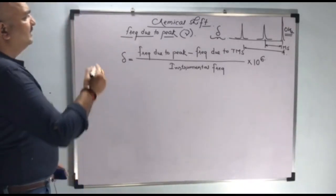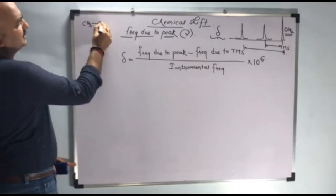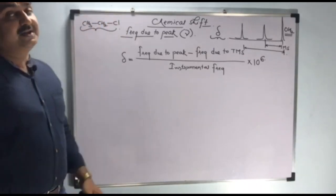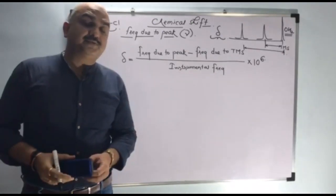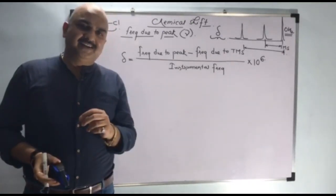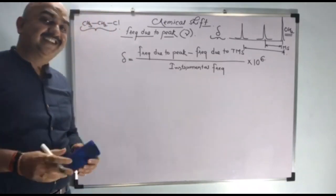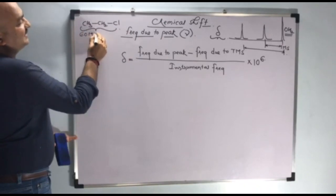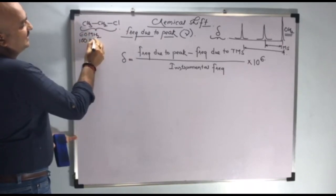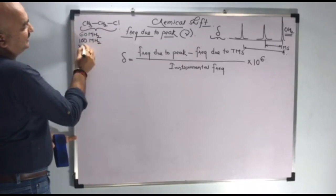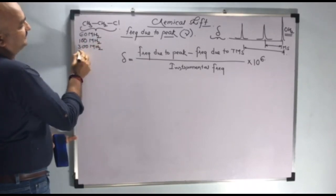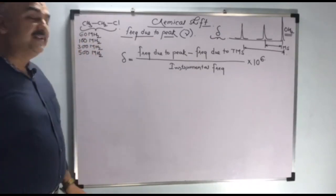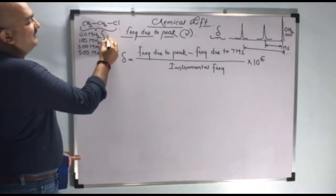Consider in this CH3-CH2-Cl NMR spectra we have taken. NMR spectra is a graph of absorption versus external magnetic field, where radio frequency is kept constant. That radio frequency is either 60 megahertz, 100 megahertz, 300 megahertz, or 500 megahertz. These values are known as instrumental frequency.